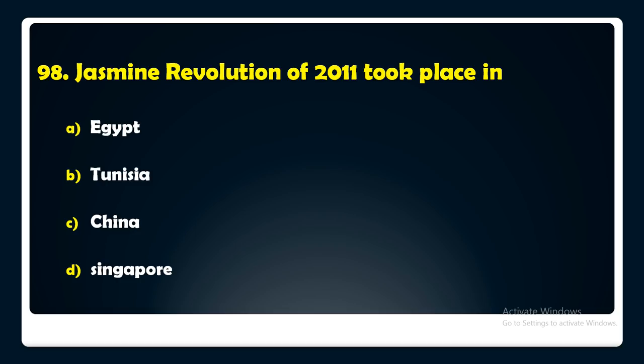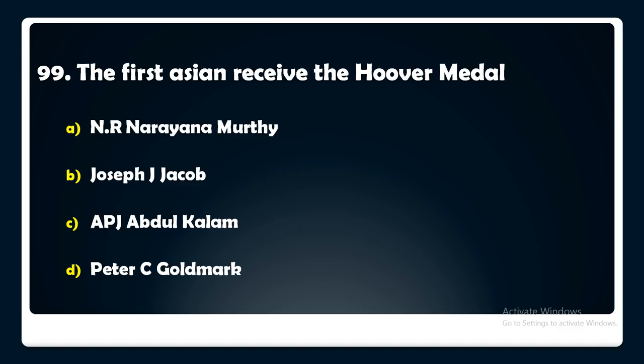The first Asian to receive the Hoover Medal was — N.R. Narayana Murthy, Joseph J. Jacob, E.P.J. Abdul Kalam, or Peter C. Goldmark? The answer is: the first Asian to receive the Hoover Medal was E.P.J. Abdul Kalam.